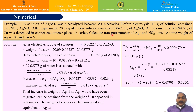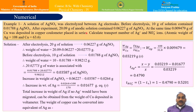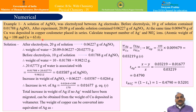Let us now solve a numerical based on what we have seen. In this example, a solution of silver nitrate was electrolyzed between silver electrodes. Before electrolysis, 10 grams of solution contained 0.01788 grams of silver nitrate. After the experiment, 20.09 grams of anodic solution contained 0.06227 grams of silver nitrate. At the same time, 0.009479 grams of copper was deposited in a copper voltmeter placed in series. We need to calculate the transport number of silver ion and nitrate ion. This numerical is based on the Hittorf's method.